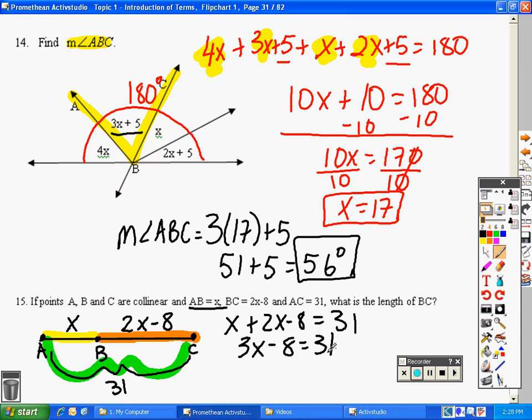Add 8 to both sides. That's 3X equals 39. And then divide both sides by 3. X equals 13. Alright, almost finished.